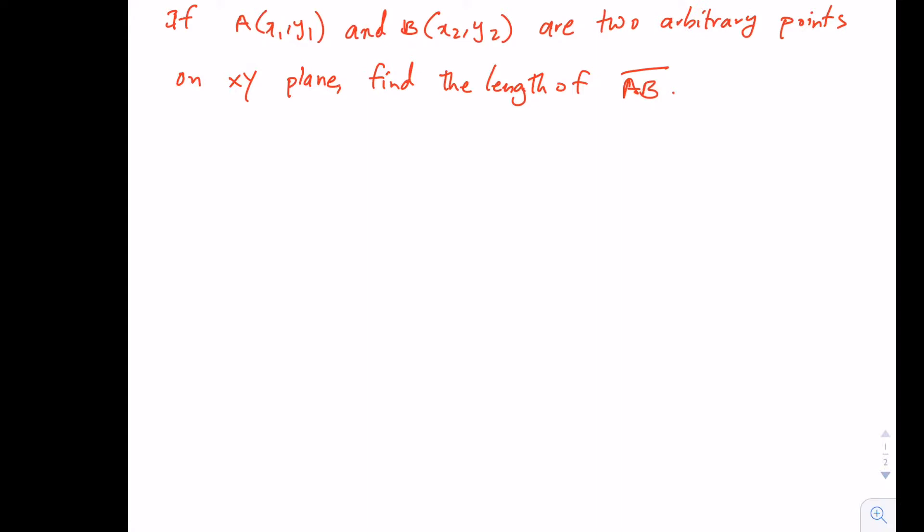So let's show two arbitrary points A and B on the xy axis. If this is x and this is y, I can pick A to be here and B to be here. And then the x value of A is x1 and its y value is y1. And for B, its x value is x2 and its y value is y2.